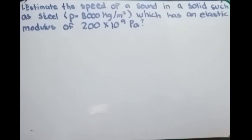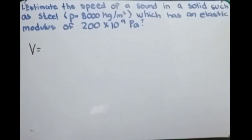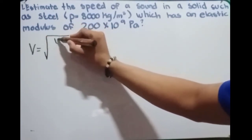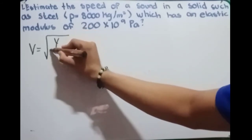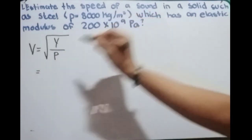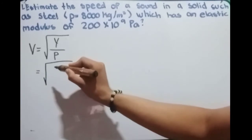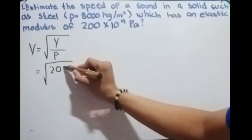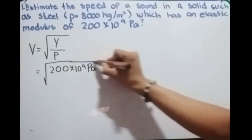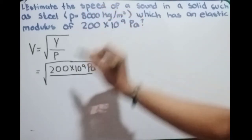We know that the speed of sound, V, is equal to the square root of Young's modulus over the density. By this time we have the given elastic modulus or Young's modulus which is 200 times 10 raised to 9 pascals, over the density of steel which is 8000 kilograms per cubic meter.